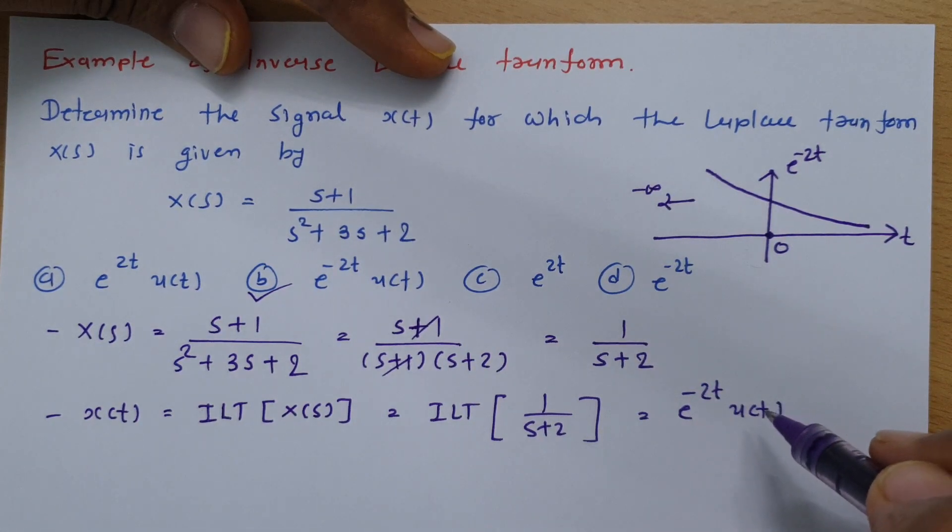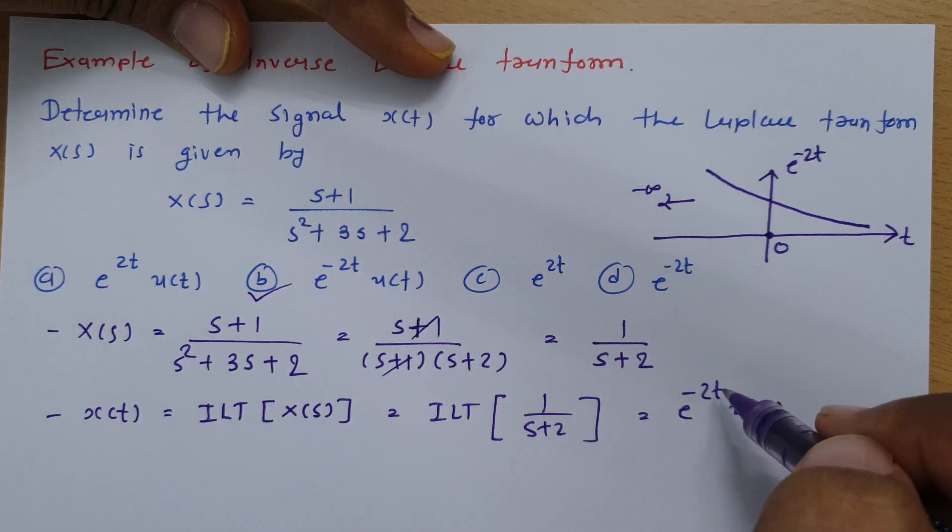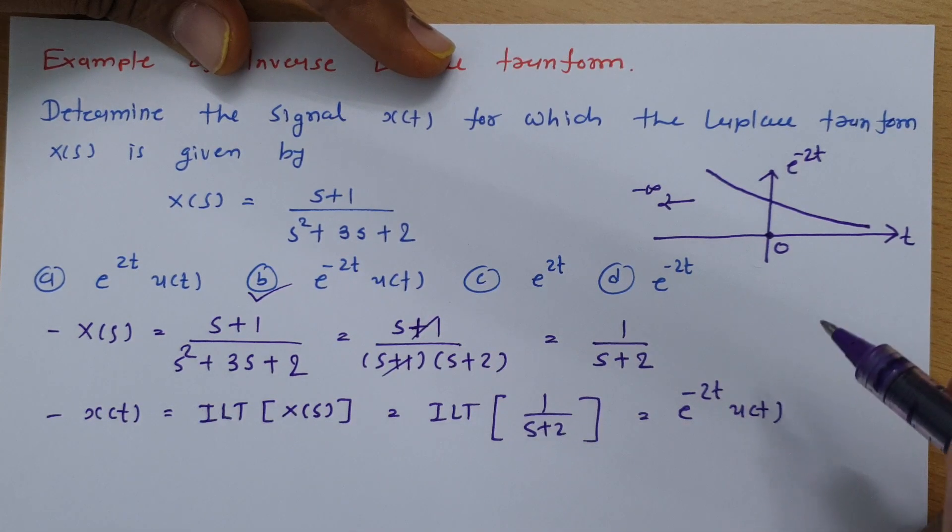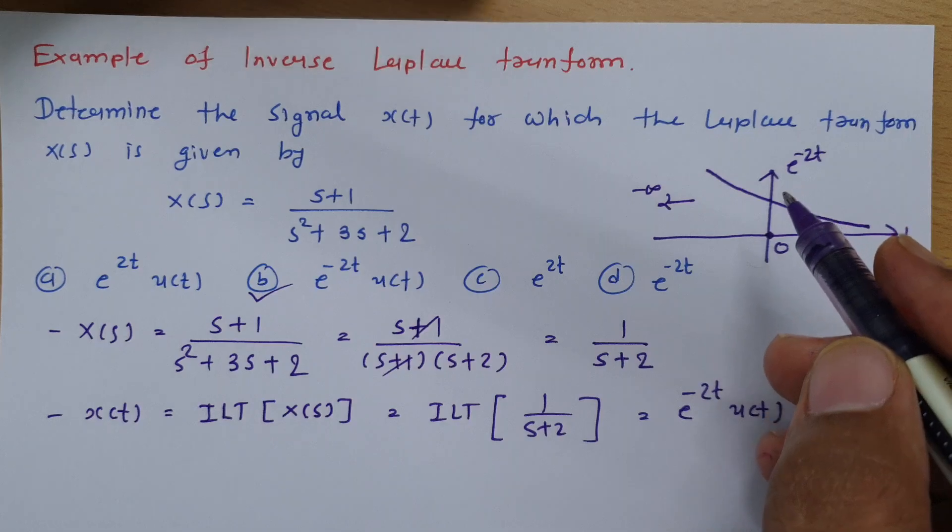So it is compulsory to multiply u(t) with e^(-2t) when you do inverse Laplace transform of this. So this is what we need to keep in mind.